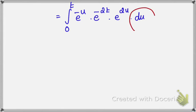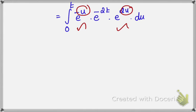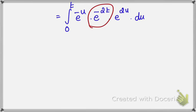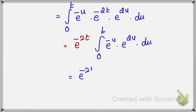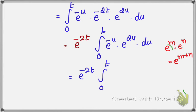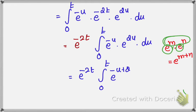We are going to integrate with respect to u, so terms without u are treated as constants. Checking which terms contain u: e power minus u has u, e power 2u has u, but e power minus 2t has no u term — so take e power minus 2t outside. Next step: e power minus 2t times integral 0 to t of e power minus u times e power 2u du. Again, the bases are the same, so we add the powers: minus u plus 2u equals u. So that becomes e power minus 2t times integral 0 to t of e power u du.